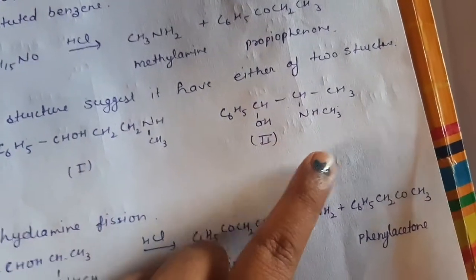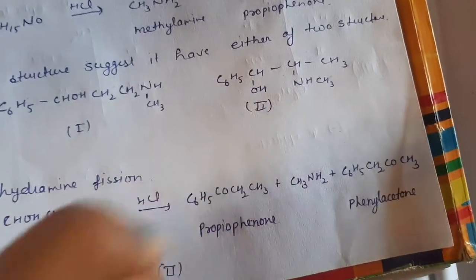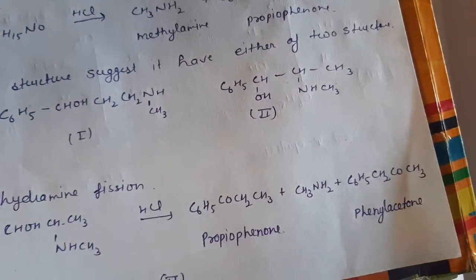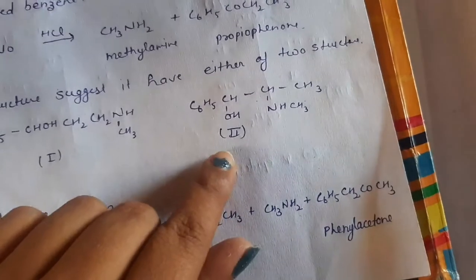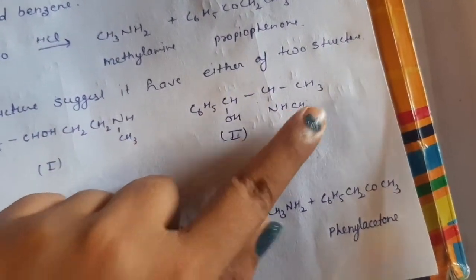And the formation of these complexes show that the structure of this ephedrine is this one. Your second structure is the proper structure of ephedrine which explains all its reactions. Hence, we can conclude that the structure of ephedrine is this one: C6H5-CHOH-CH(NHCH3)-CH3.